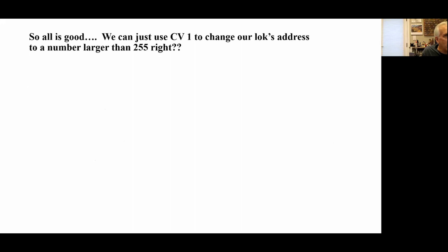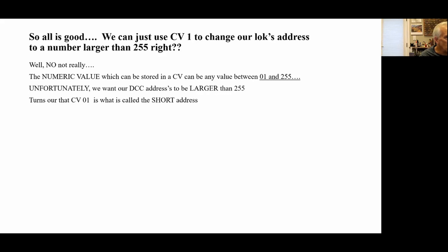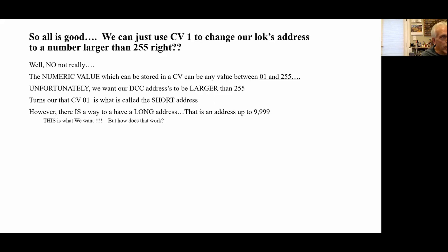CV1 is where you store the loc's address. So we can put in a number larger than 255, right? Well, not really — there's a little snag. The numeric value which can be stored in a CV has to be in the range of 1 to 255. So unfortunately that's a bit of a problem, because we want our DCC addresses to be larger than 255. It turns out that CV01 is called the short address, and you can only store in that short address numbers between 1 and 255.